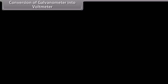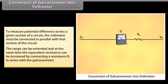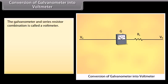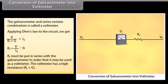To convert a galvanometer into a voltmeter: the voltmeter is connected in parallel with the circuit section. The range is extended and resistance increased by connecting a resistance R_S in series with the galvanometer. Applying Ohm's law: V divided by (R_S plus G) equals I_G, giving R_S equals V upon I_G minus G. R_S must be put in series with the galvanometer for use as a voltmeter, giving the voltmeter a high resistance of (R_S plus G).